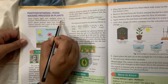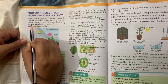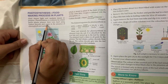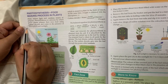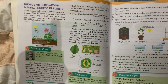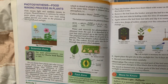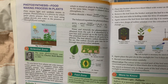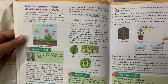Photosynthesis is a process by which green plants prepare their own food using carbon dioxide and water in the presence of chlorophyll and sunlight. What is chlorophyll? Chlorophyll is a pigment that gives plants their green color. Because of chlorophyll, a plant has a green color. If there is no chlorophyll, there will be no green color in the plant.